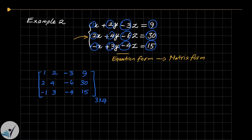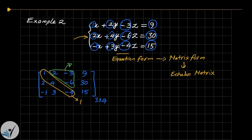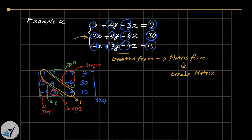Now we want to transform this original matrix to echelon form. To do that we need to transform the pivot positions to 1, and the entries below and above those pivots to zero. Similar to the previous example, we start with step one — transforming the entries below the first pivot to zero — then step two, then step three, and step four.